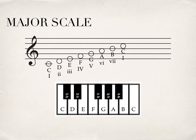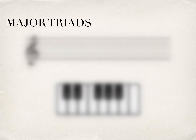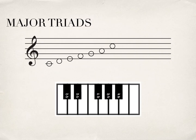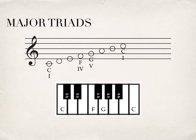Now, you may be looking at this and thinking: why are certain Roman numerals capitalized and others lowercase? We'll get to that in just a second. We're going to start talking about major triads to begin with. We saw that a few of these were capitalized and a few weren't. There are three chords in a major scale that are major: the I chord, the IV chord, and the V chord. What makes it a major triad? Remember last time we talked about thirds — if the third is a major third, then that makes the triad major.